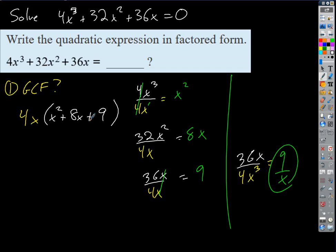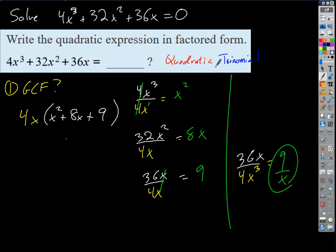We've done step one — we've pulled out a greatest common factor. Now step two is: can we break apart this remaining factor? That's what we'd call a quadratic trinomial. It's quadratic because of the x² term, and it's a trinomial because it has three terms: x² + 8x + 9. We want to see if we can break that apart.